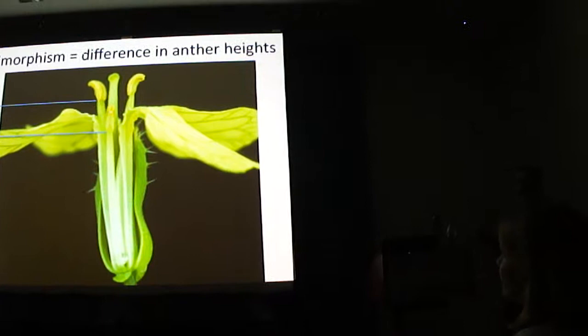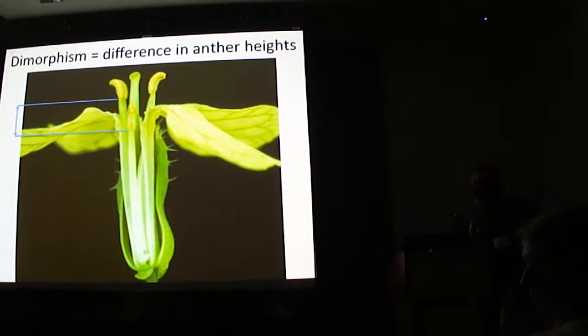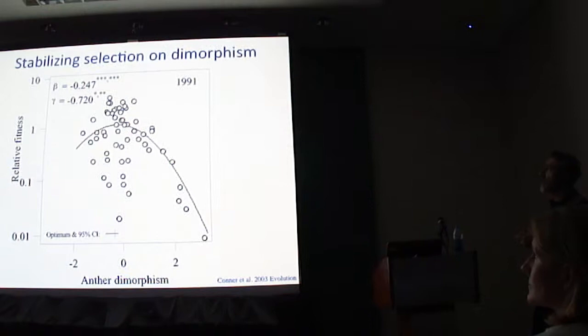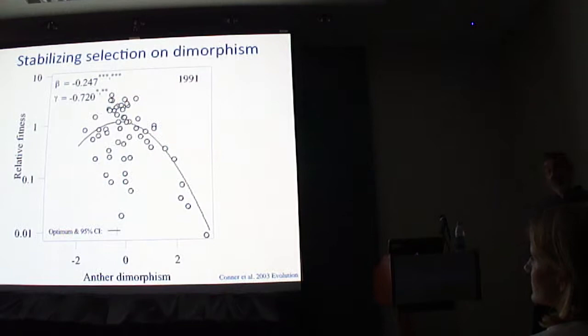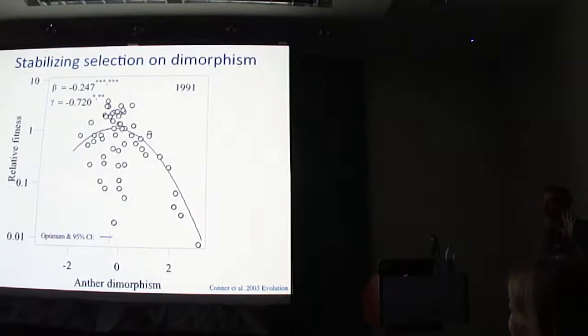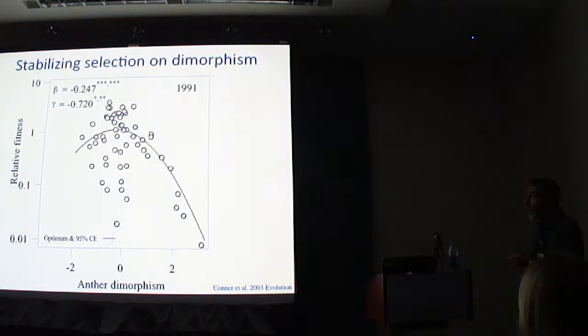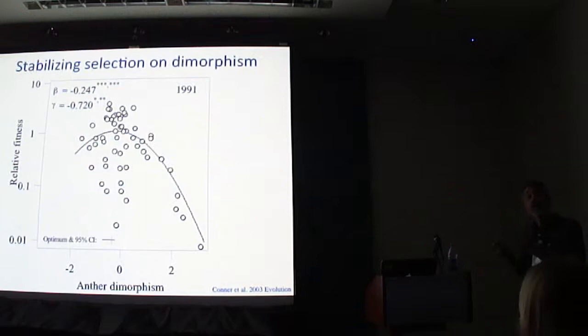Some years ago, we reanalyzed data I had collected to look at selection on dimorphism. This is a standard Lande-Arnold selection gradient plot. The y-axis is lifetime seed-siring success — these are annual plants, so it's not too hard — measured through genetic paternity analysis, which back then we did with allozymes, genetic markers that work for paternity analysis. The x-axis is the phenotypic trait, standardized to a mean of zero and a standard deviation of one. In real life, the mean is a little more than two millimeters difference in height between the short and long stamens.